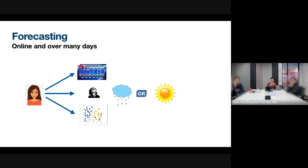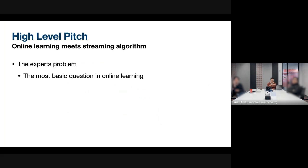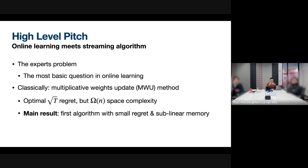These experts are the weather channels, the scientists, statistical models that you can query, and they will give you recommendations. Rather than trying to predict results directly, the goal is to aggregate all their recommendations and just compete with the best expert. This is known as the expert learning problem — it's probably the most basic question in sequential decision-making. Today, we're going to look at this problem from a new perspective: the perspective of space complexity.